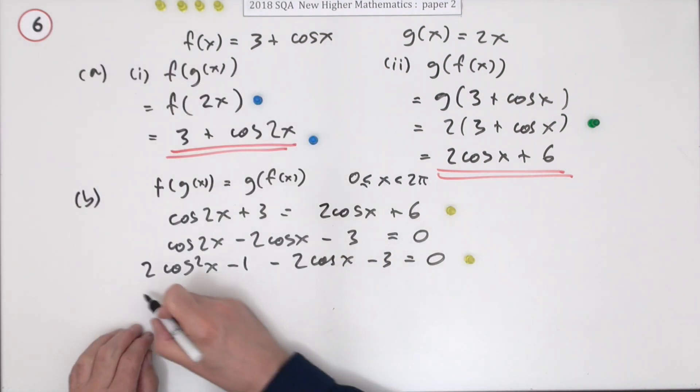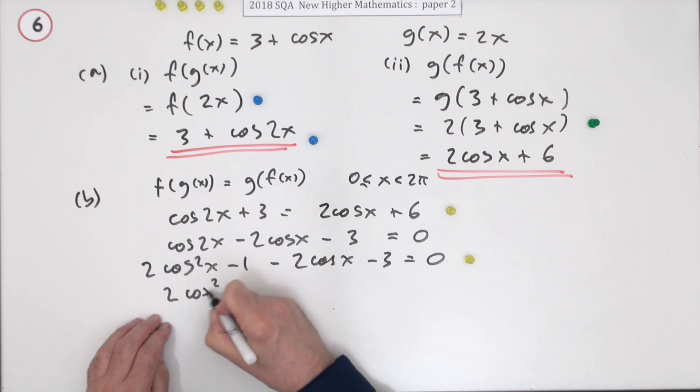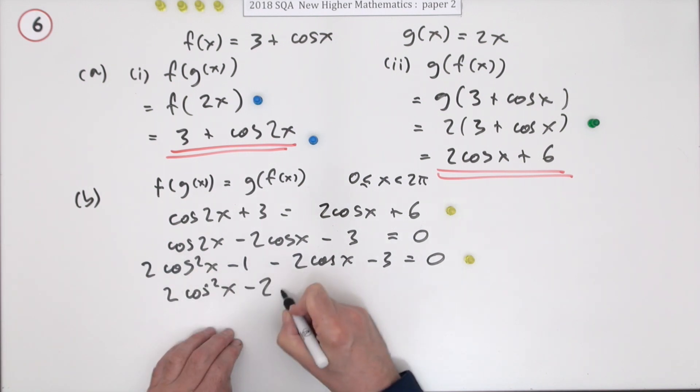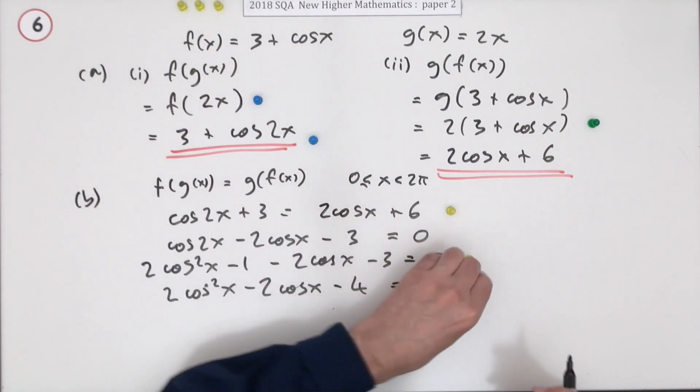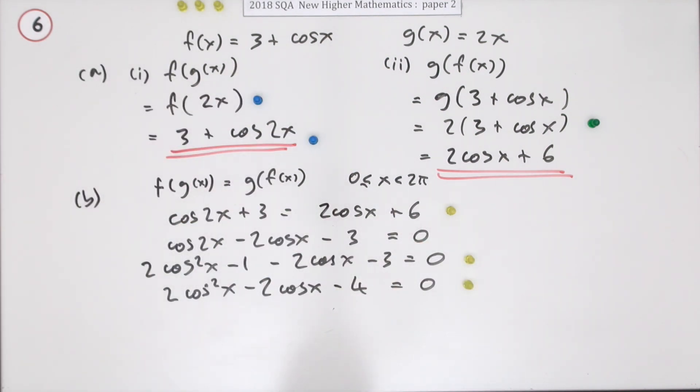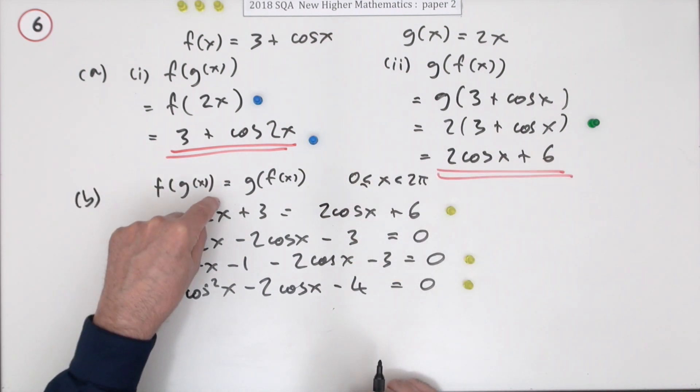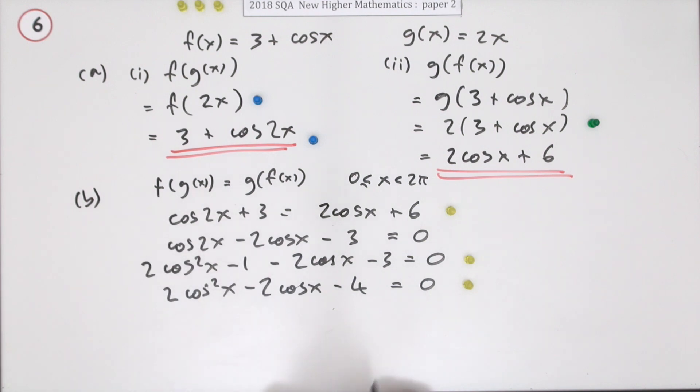And then finally for tidying it up into quadratic form, 2 cos squared x minus 2 cos x minus 4 equals 0 gets another mark. That's not so bad - all you have to do is make them the same and then change the double angle to a single angle by using that double angle formula. Now you've got a quadratic so you can factorise it. You can either divide everything by 2.